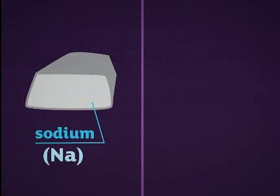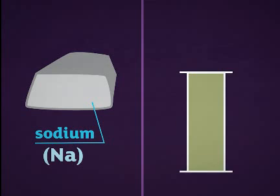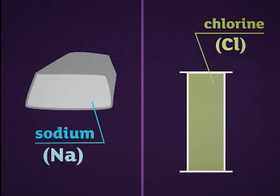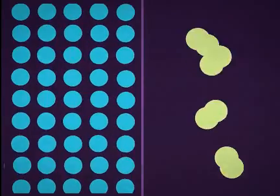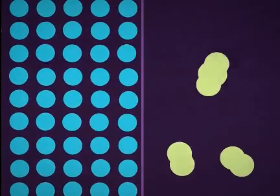Sodium is a soft, shiny metal. Chlorine is a green, poisonous gas. Sodium and chlorine are both elements, so they each contain only one type of atom.